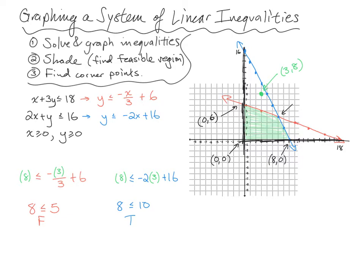Let's say your graphs aren't perfect — how could you find that intersection point? You can always come back to the original inequalities. You can use the given inequalities to solve a system of equations. Turn them into equations and solve by elimination, substitution, or even a matrix. If you set up a system of equations with x plus 3y equals 18 and 2x plus y equals 16, you can solve from there.